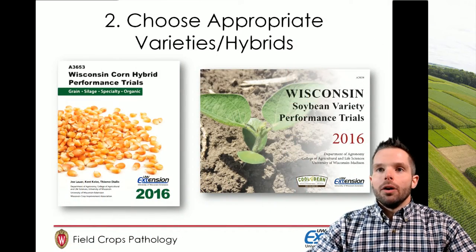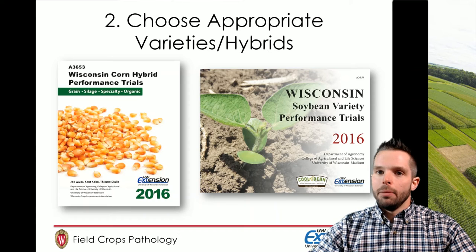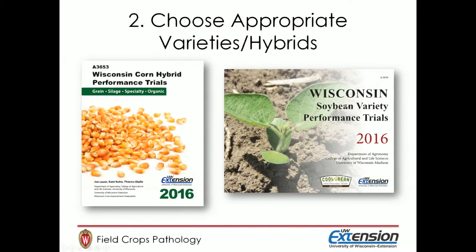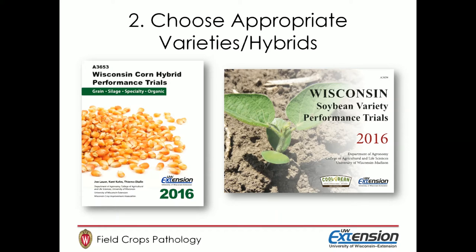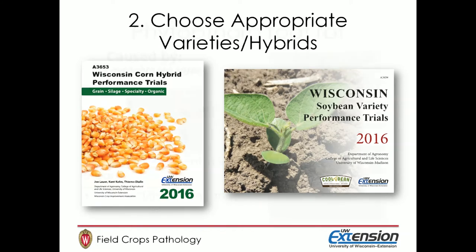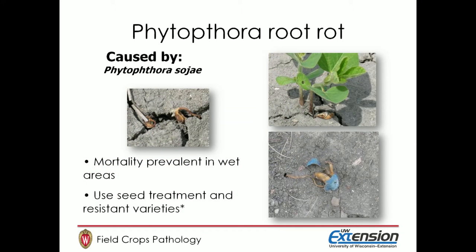The second point made early on was to choose an appropriate variety or hybrid. I would encourage you to consult extension documents A3653 and A3654 — the corn hybrid performance trials and the soybean variety performance trials. These are conducted each year by our corn and soybean agronomists here in Wisconsin, and they are an excellent resource for selecting proper varieties and hybrids for your location. They also provide information about particular disease resistance traits, which can be very helpful if you know something about the disease levels in your particular field.